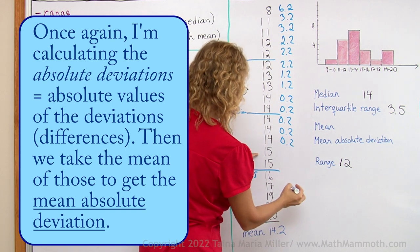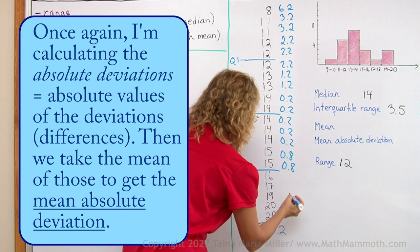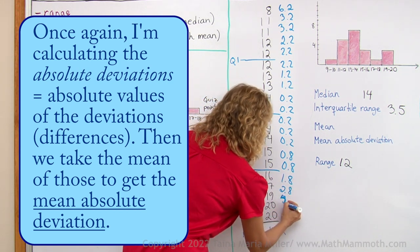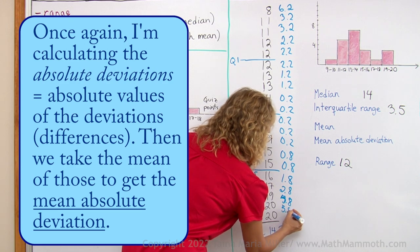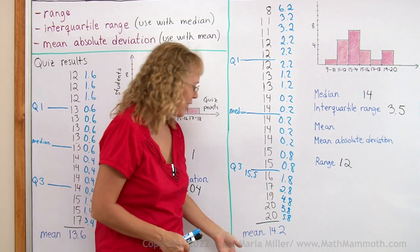Then 15 and 14.2 is 0.8. The difference is 0.8, the positive difference again. Here it will be 1.8, 2.8, 4.8 and 5.8. Alright, so now that list is ready.